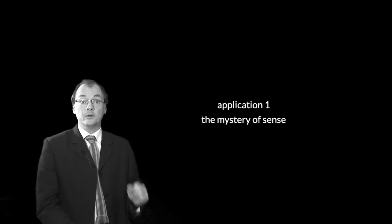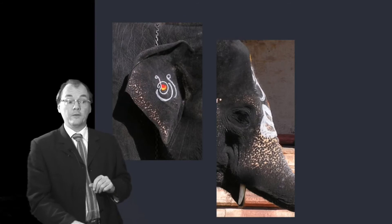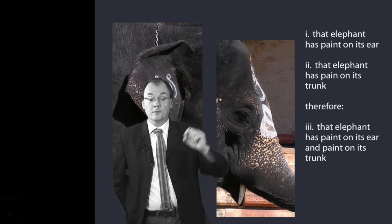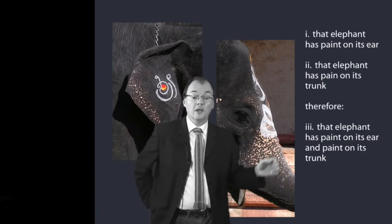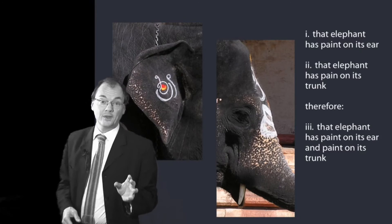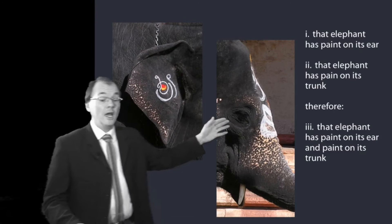We know we need senses in order to characterise points of view, but we've got the first idea what they are. Consider: we're looking through a window and might think some thoughts about a marvellous elephant. Looking through one window, you might think 'that elephant has paint on its ear'; looking through another window, you might think 'that elephant has paint on its trunk.' But to draw the conclusion that the elephant has paint on both, you seem to need a further step — the idea that that elephant seen through this window is that elephant seen through the other window. So there's an identity statement, 'this elephant is that elephant,' which can be informative and play a role in allowing you to draw this conclusion, or not.